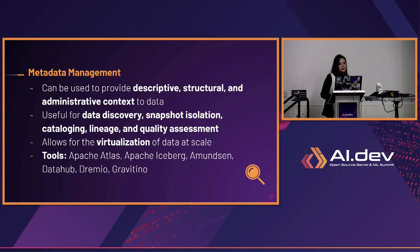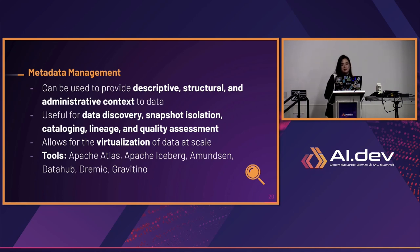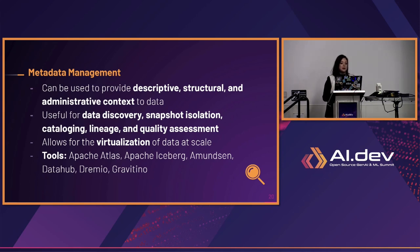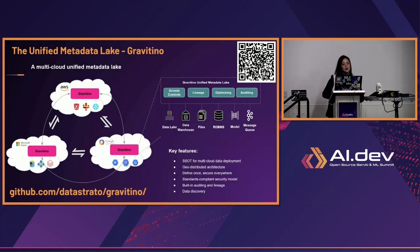Metadata can also be a really powerful tool, moving to a bigger plane from just data quality. We want a really good understanding of our data without having to invest in all of this infrastructure just to test hard-coded things. Having dynamic and active metadata can really enable so much more in terms of your infrastructure. Examples include descriptive, structural, and administrative context to your data. It's useful for data discovery, lineage, and generally being able to virtualize your data — very powerful especially if you're on a data platform team. Tools for this include Apache Iceberg, Munson, Data Hub, and Gravitino.